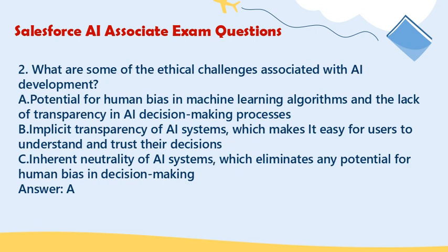Question 2: What are some of the ethical challenges associated with AI development? A. Potential for human bias in machine learning algorithms and the lack of transparency in AI decision-making processes. B. Implicit transparency of AI systems, which makes it easy for users to understand and trust their decisions. C. Inherent neutrality of AI systems, which eliminates any potential for human bias in decision-making. Answer: A.